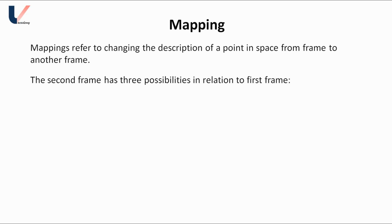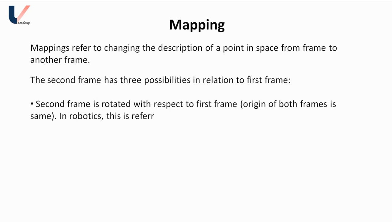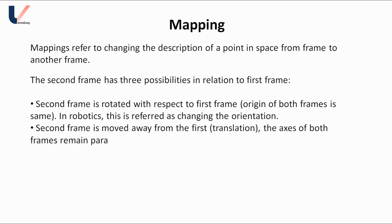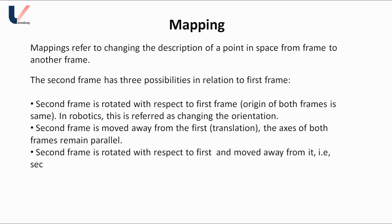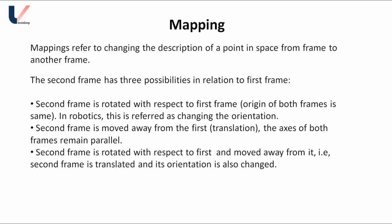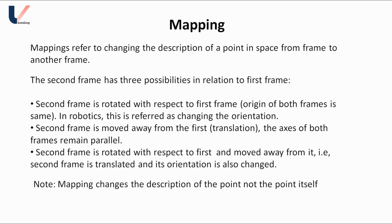The second frame has three possibilities in relation to the first frame. The first is that the second frame is rotated with respect to the first frame, keeping the origin of both frames the same — in robotics this is referred to as changing the orientation. The second possibility is that the second frame is moved away from the first, that is translation, keeping the axes of both frames parallel. The third possibility is that the second frame is both rotated and translated. A key point: mapping changes the description of the point but not the point itself — only its reference frame is changed.